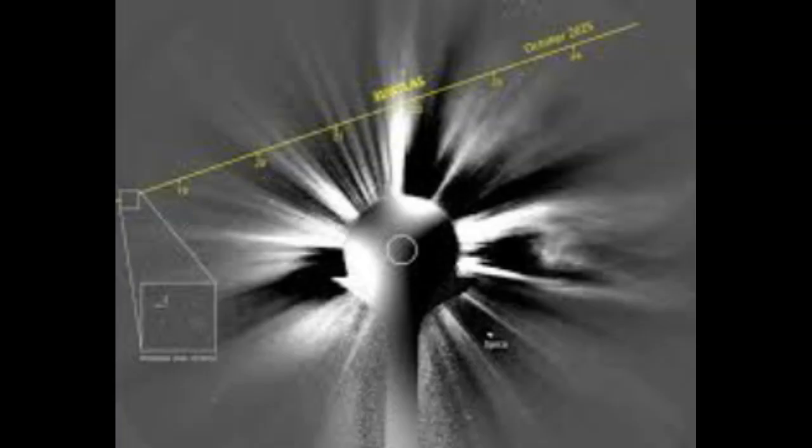If we see any unexpected non-gravitational acceleration, artificial lights, or excessive heat—i.e., engine activity—it could point to alien technology. Otherwise, Comet 3I Atlas is what it appears to be: a comet.